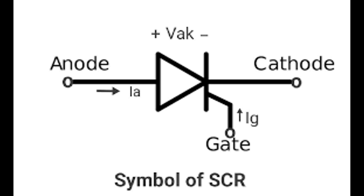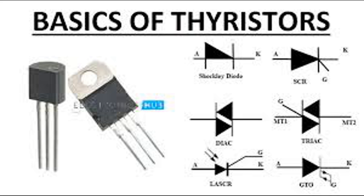When the current falls below the holding current, the J2 junction becomes reverse biased again, and the thyristor returns to the forward blocking mode. Key points — Latch-on effect: once the thyristor is turned on, it remains on (latched) until the anode current is reduced below the holding current. Gate control: the gate terminal is used to initiate the turning on of the thyristor, but it has no control over turning it off.